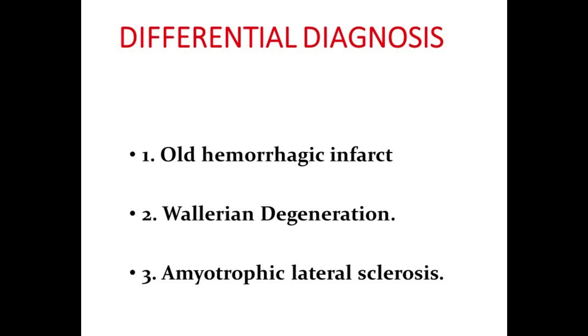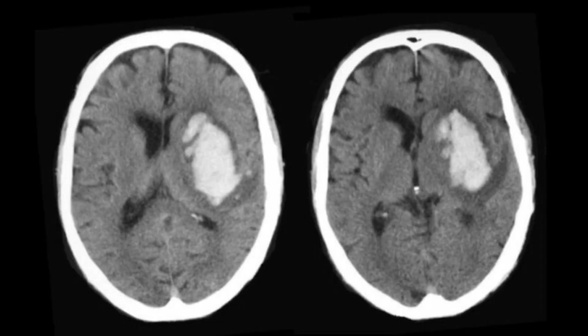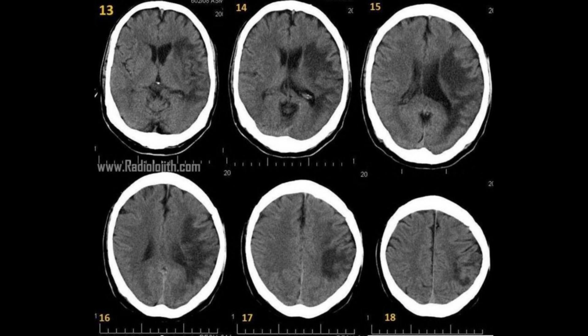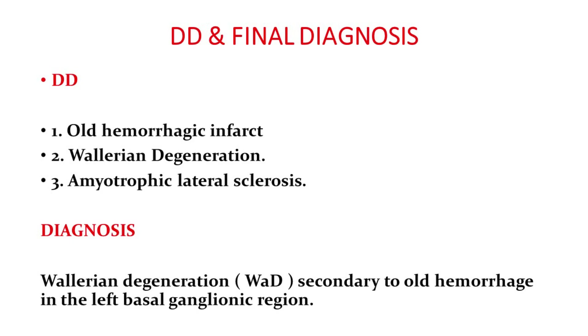The patient had been admitted to a hospital one year back due to a left ganglionic hemorrhagic infarct. The patient was there for a week, then discharged, went for native medicine, and was lost to follow-up. The patient was readmitted here with altered sensorium, and CT was done to rule out intracranial hemorrhages.